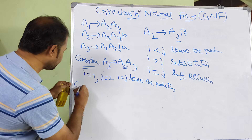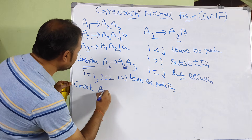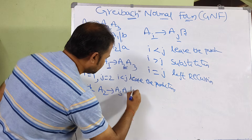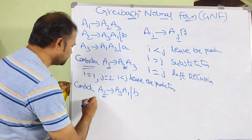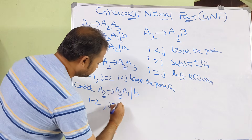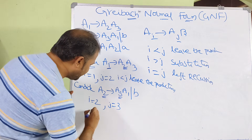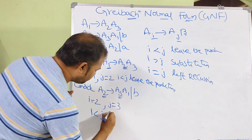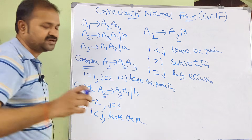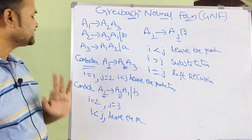Let us consider the next production: A2 produces A3, A1 or B. Here I value is 2 and J value is 3, so I is less than J. Since I is less than J, we leave the production now and do the substitution later.